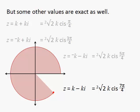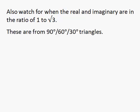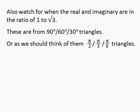As well as the 45 degree triangles, we should also watch for ones where the imaginary and real components are in a ratio of 1 to √3. These are from 90, 60, 30 triangles, or, as we should think of them, π/2, π/3, and π/6.